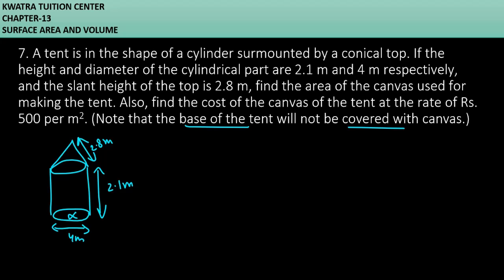So what will we do here? We will find the surface area. Surface area of cylindrical portion. And then we can find the surface area of the cone. Then we can add them together. CSA of cylinder, it will give you 2πrh.